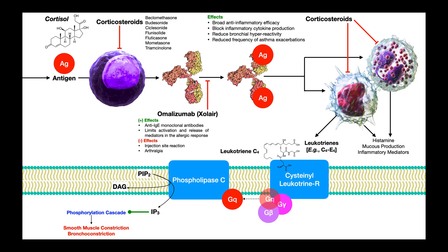Xolair is normally administered via injection. Adverse effects include a reaction at the injection site and joint pain near the injection site. In short, Xolair is just an inhibitor of the IgE antibodies — it prevents antigens from binding and therefore prevents activation of the IgE antibody. It's only used in asthma, not COPD.